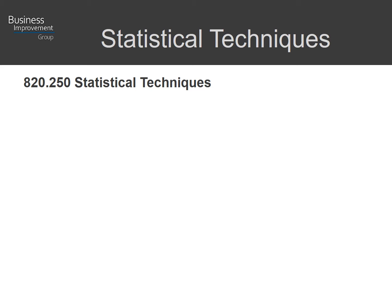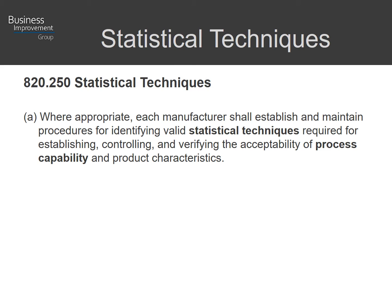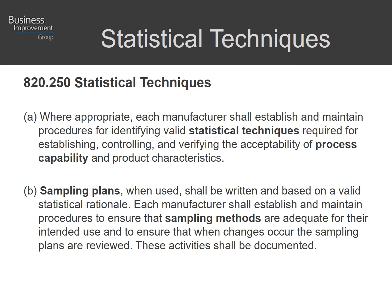The FDA also discusses statistical techniques. Where appropriate, the FDA instructs the medical device industry to use statistical techniques to establish control and verify the acceptability of process capability of product characteristics. Sampling plans and methods need to be adequate for their intended use to ensure that any changes within the plans are reviewed so that conclusions drawn are statistically valid.